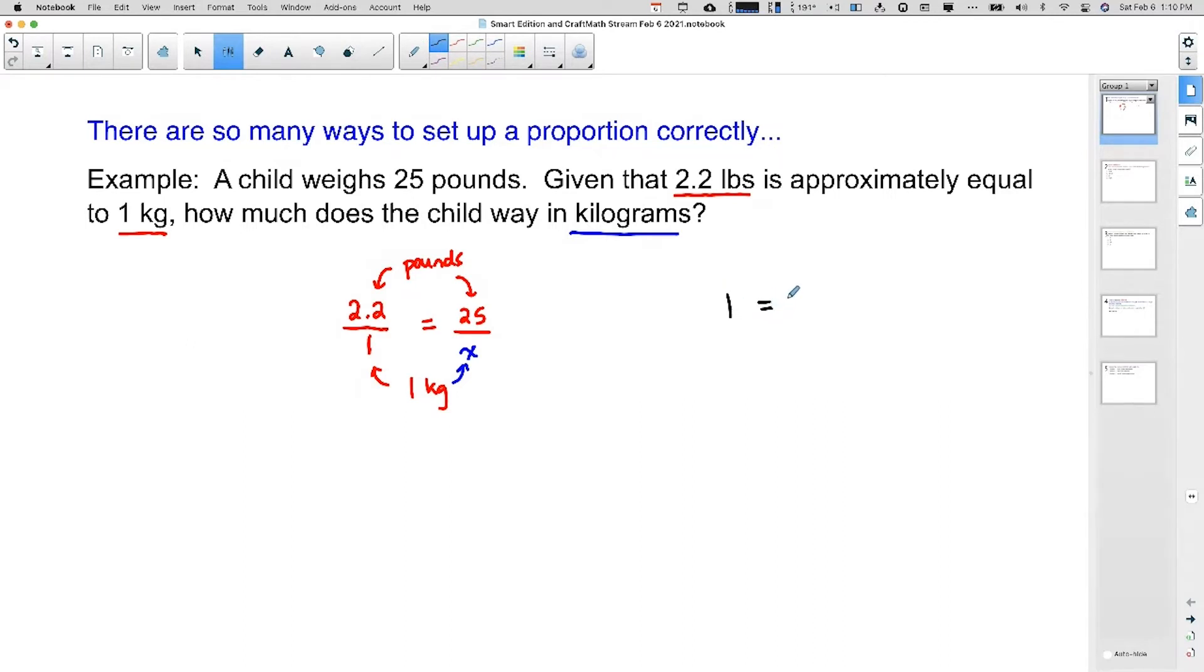Now, what in the world did I do here? Well, I'm still using that conversion: 2.2 pounds, 1 kilogram. I'm setting it up totally different. But let's recognize now that this number represents kilograms on the left and 2.2 represents pounds on the right.